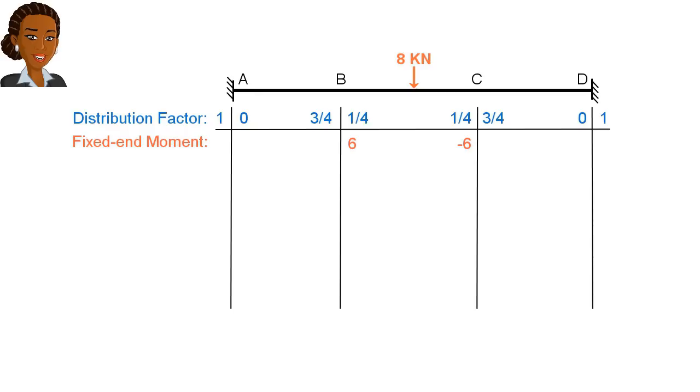We start by balancing the joints. Initially, only joints B and C need to be balanced. We then carry over half of the balancing moments to the other side of each member, like this.